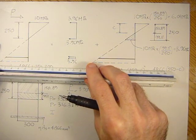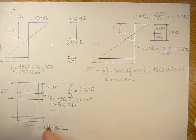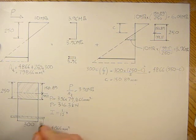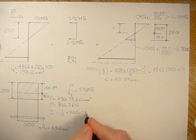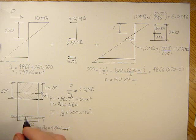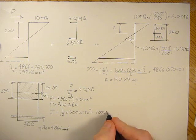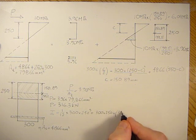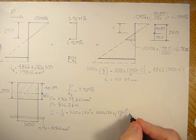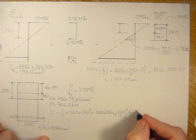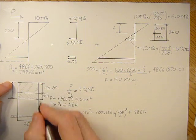Taking the inertia about the top, I get 1/12 times 300 times 250 cubed plus the Ad squared component - that's 300 times 250 times (250 over 2) squared, plus the transformed area 4866 times 550 squared.